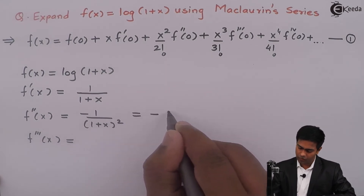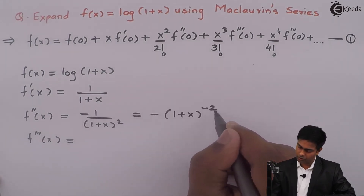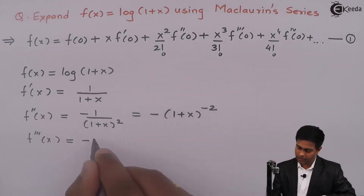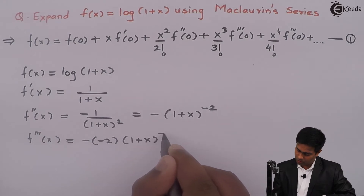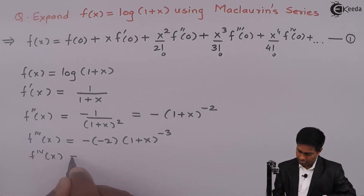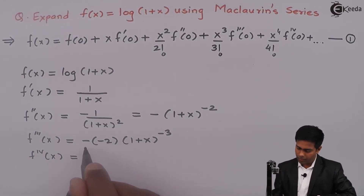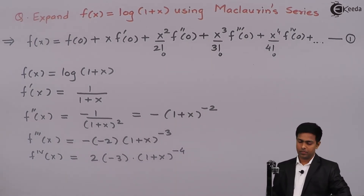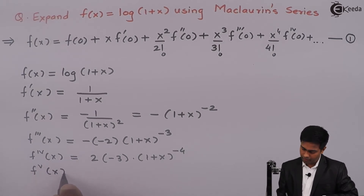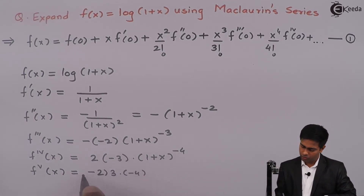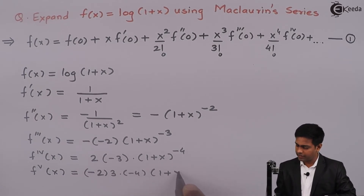For f'''(x), I rewrite f''(x) as −(1+x)^(−2). The derivative of this is −(−2)(1+x)^(−3), which gives 2/(1+x)³. For the fourth derivative, this becomes −2·(−3)(1+x)^(−4) = −6/(1+x)⁴. Similarly, the fifth derivative gives 2·3·(−4)(1+x)^(−5), which is 24/(1+x)⁵. So those are all the derivatives we need.